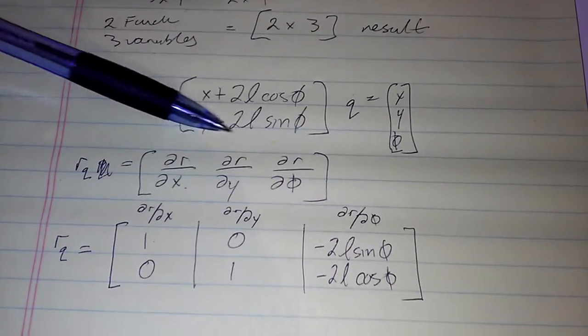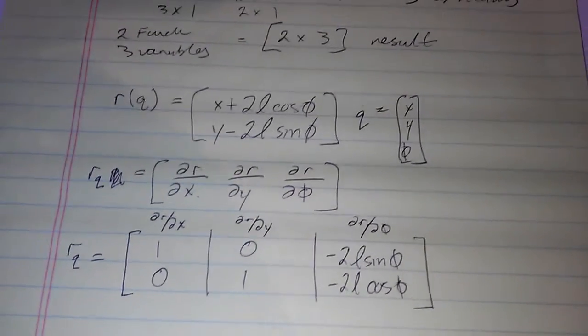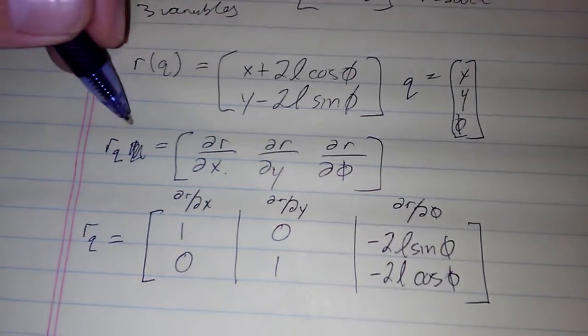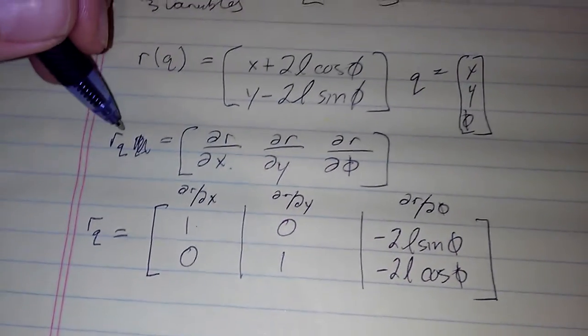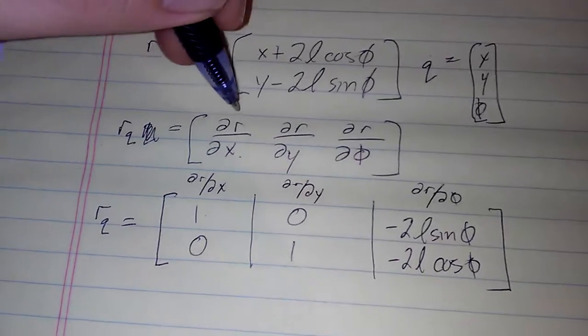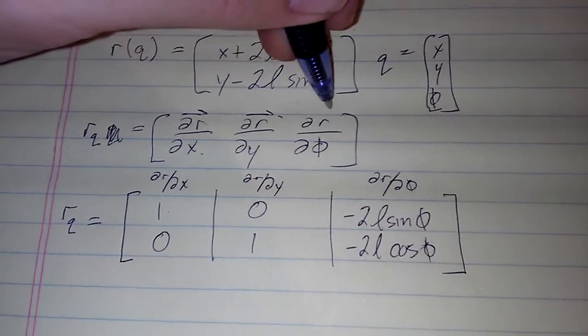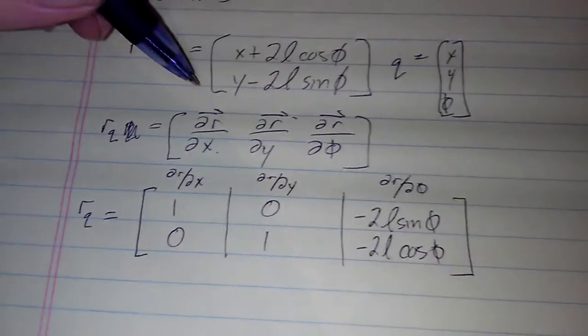We end up with—this is sort of like a matrix of vectors, but anyways, each one of these is also a vector.